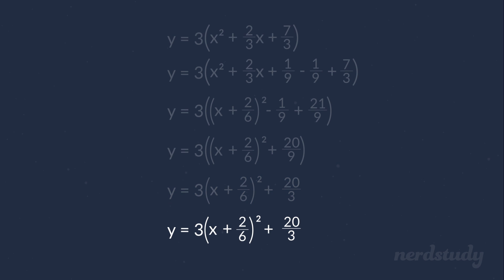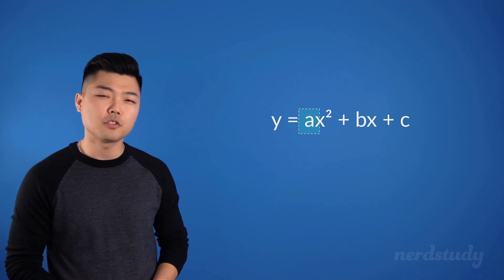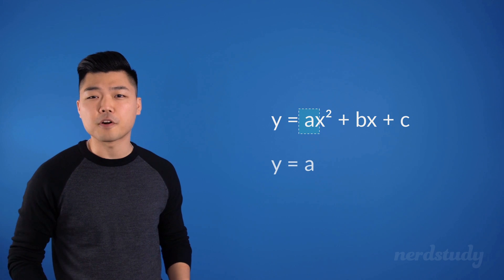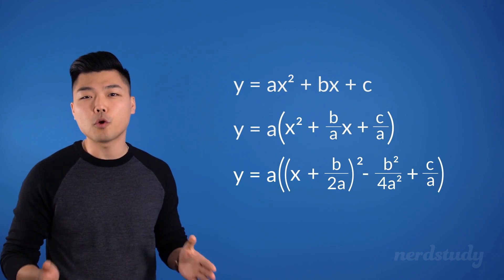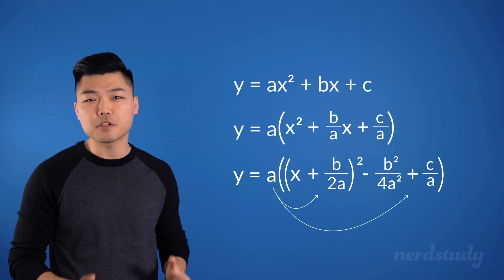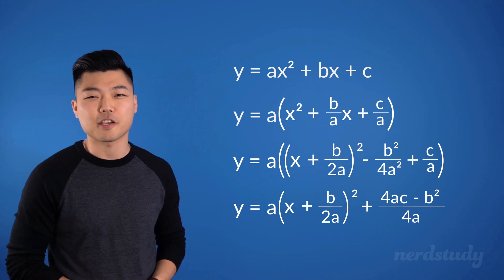We can simplify that 2 over 6 in the brackets down to 1 over 3. Here's our answer after completing the square. Again, if you carefully go over these steps, you'll be able to solve other questions with an a that is not equal to 1. Just remember to start by factoring out the a first, and then solving everything as you would do it normally. Then go ahead and distribute the multiplication of a back to the equation, and then you've got yourself the equivalent vertex form.